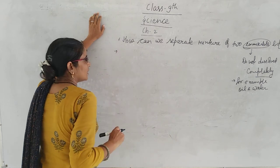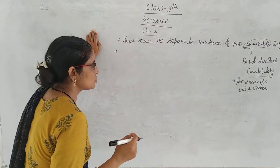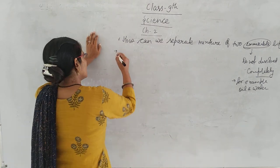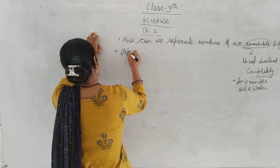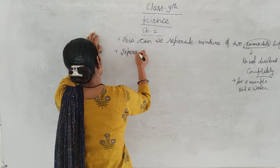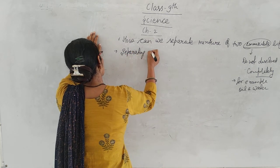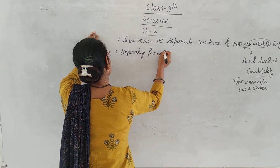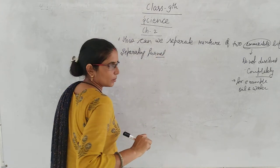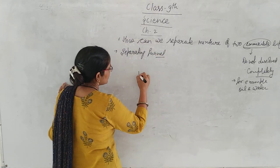So, how can we separate a mixture of two immiscible liquids? The answer is by using a separating funnel. With the help of a separating funnel, which is an instrument used for this purpose.